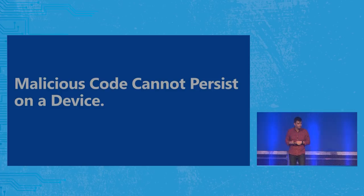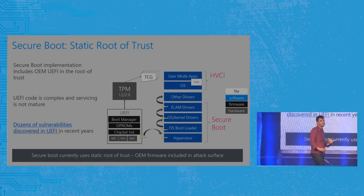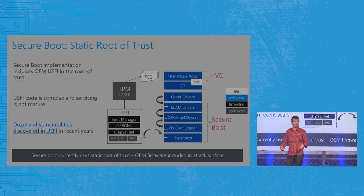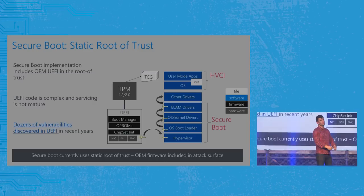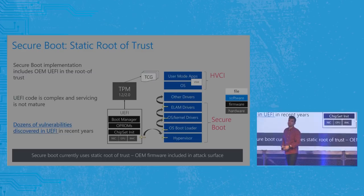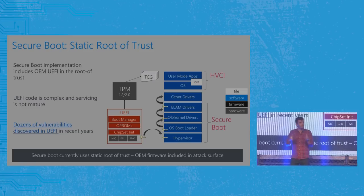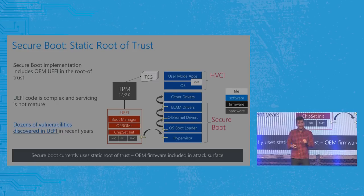For malicious code persistence — today we have Secure Boot, which validates that all core components that start up in the machine, from UEFI firmware to the Windows boot loader to the hypervisor, are correctly signed. Where that strategy can have issues is where OEM firmware that is not up to security standards is in the chain of trust. Security research from folks like Alex Matrosov has shown that there are literally dozens of vulnerabilities in early boot. It will be very hard to bring up the system in a trustworthy way if we have many vulnerabilities that easily bypass Secure Boot. This static root of trust is getting long in the tooth.